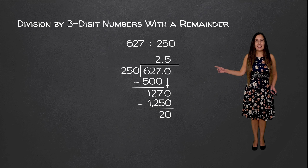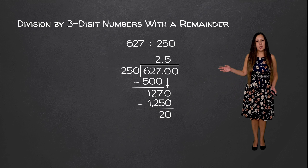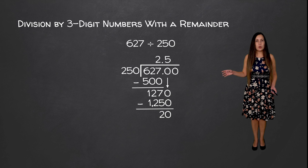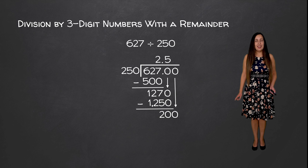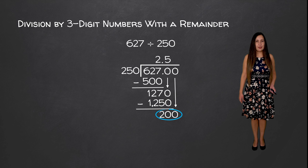Now we're going to add another zero and keep going at least to the thousandths place, or if this decimal stops before that. So we're going to bring down our zero — zero — and now we're going to see how many times 250 goes into 200.